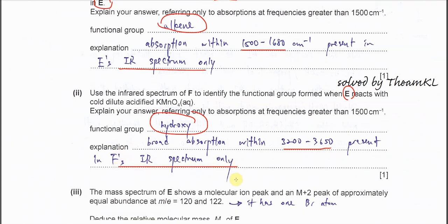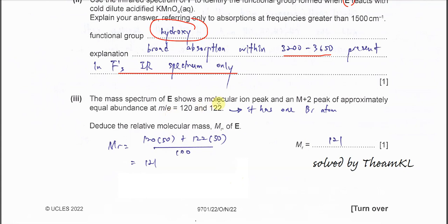The mass spectrum of E shows molecular ion peak and M+2 of approximately equal abundance, telling us that it has one bromine atom. Very important info. When the M and M+2 abundance is almost the same, so we know that it has one bromine atom. Deduce the relative molecular mass of E. This one is quite easy, right? So you just use 120 times 50%, plus 122 times 50%, over total abundance 100, so you get 121.